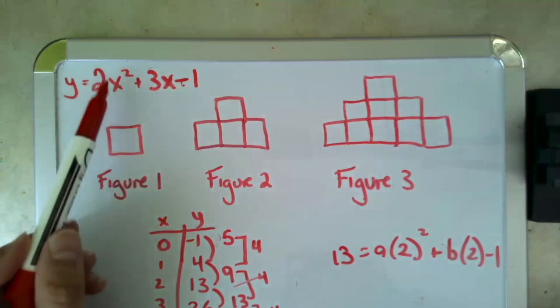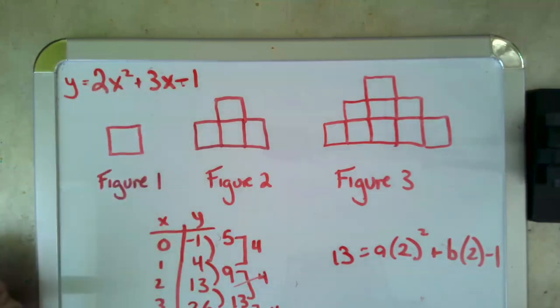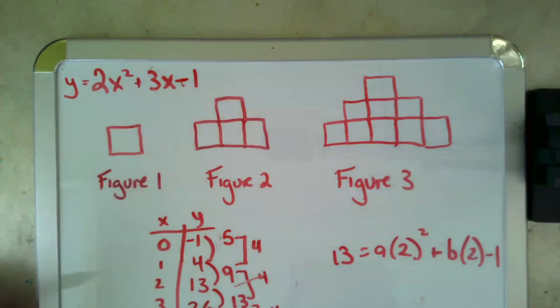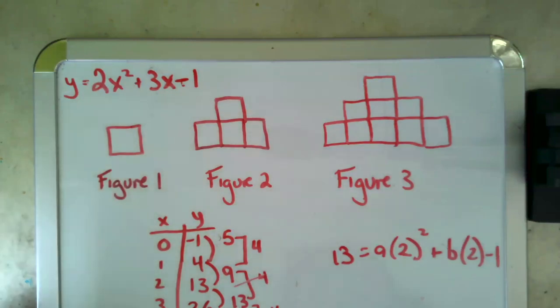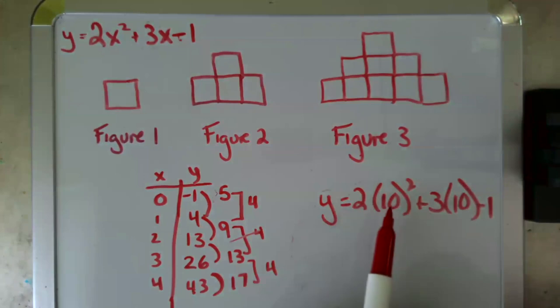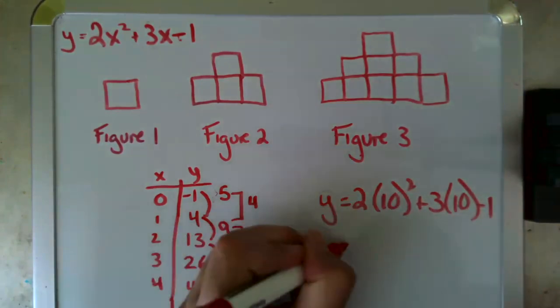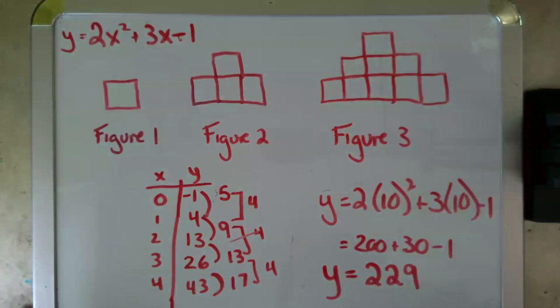Y equals two x squared plus three x minus one. My problem wanted to know figure 10. So I'm going to throw 10 into that equation. And so that gives me y equals two times 10 squared plus three times 10 minus one. So I would need 229 toothpicks to comprise figure 10.